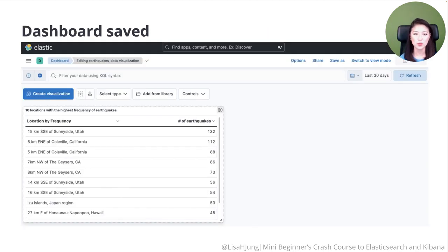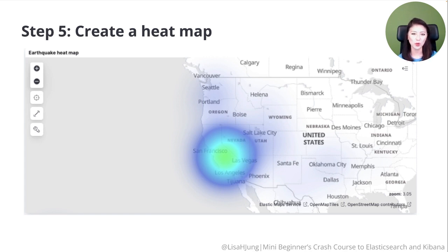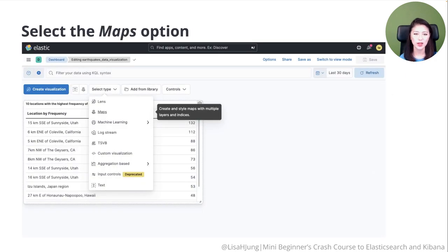Next, we'll create a heat map. With heat maps, you could visualize the location and the frequency of earthquakes by color. It's an effective way to visualize earthquake hotspots around the world and easily detect patterns.